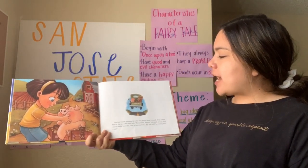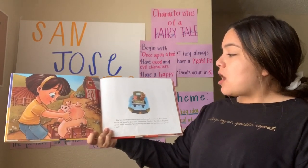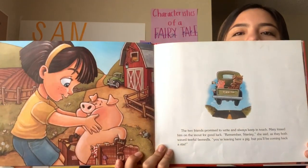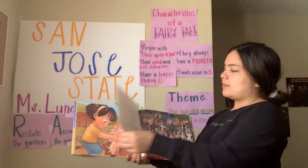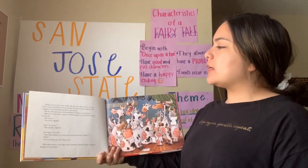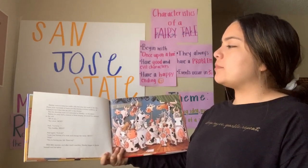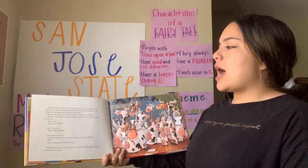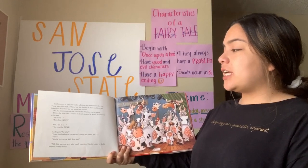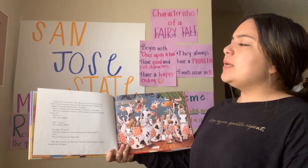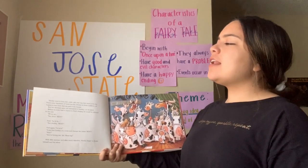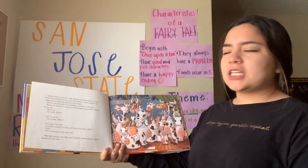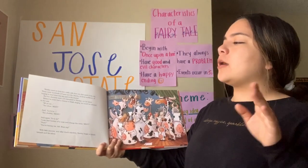The two friends promised to write and always keep in touch. Mary kissed him on the snout for good luck. 'Remember Stanley,' she said, 'you're leaving here a pig, but you'll be coming back a star.' Stanley went to 42 cattle calls that very first week in the city. There were hundreds of hams just like Stanley at those auditions. But directors were not interested — before he finished singing, he would be ushered to the exit: 'Too short. Next.' 'Too chubby. Next.' 'Lose that honker of a nose and change the name. Next.'